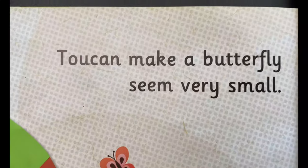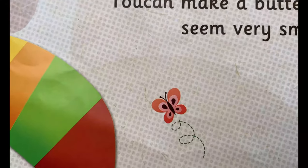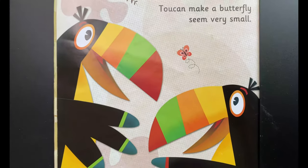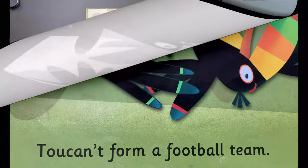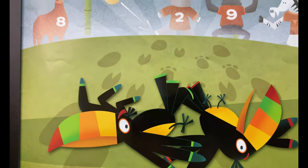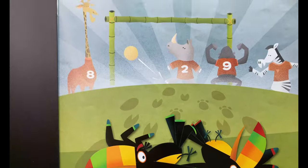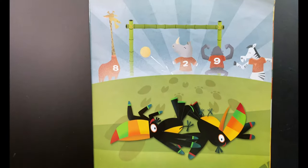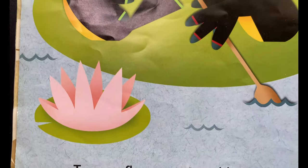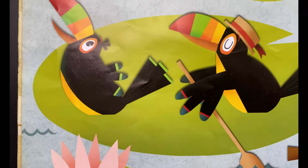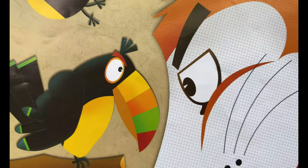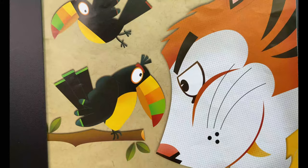Two can make a butterfly seem very small. Two can't form a football team. Two can't float on giant lily pads. Two can't frighten a great big tiger.